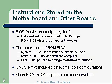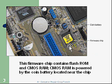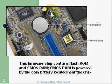Flash ROM is read-only memory chips that can be overwritten, so we could actually change the ROM since it's in a flash configuration. Here you see a small battery, and that battery is being used to support this chip. This firmware chip contains flash ROM and CMOS RAM. CMOS RAM is powered by this little coin battery, which is located right here near the chip.